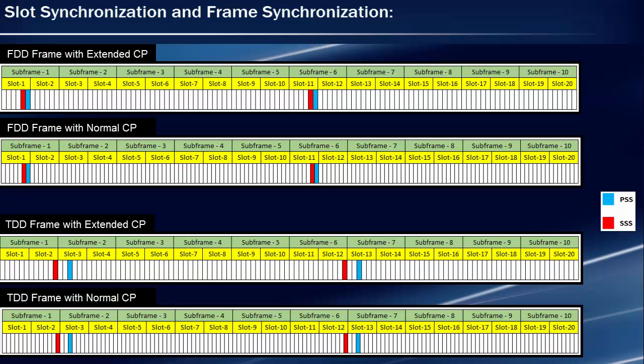There is one more important observation: the relative positioning of PSS and SSS for FDD and TDD is different in a radio frame. So by decoding PSS and SSS, UE can detect which multiplexing technique is used.